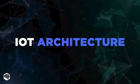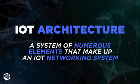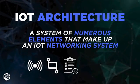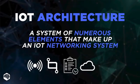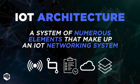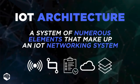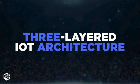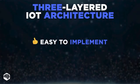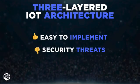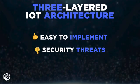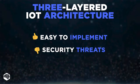IoT architecture is a system of numerous elements such as sensors, actuators, protocols, cloud services, and layers that make up an IoT networking system. The three-layered IoT architecture is easy to implement, but many security threats are the most important reason why this architecture is almost not used these days.